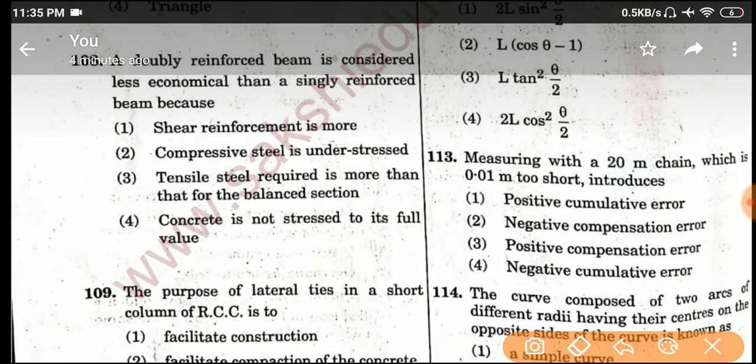A doubly reinforced beam is considered less economical than a singly reinforced beam because...options are 2 and 3.